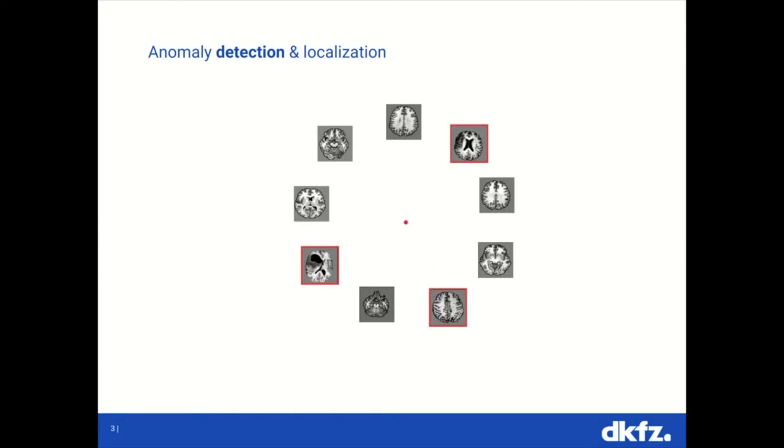However, we want to go one step further and also localize the anomalies. That means showing where the anomalies are. As you can see here, now the anomalies are outlined.